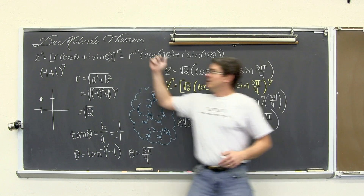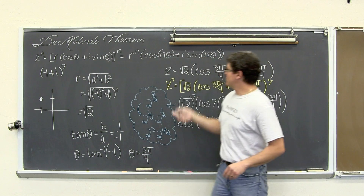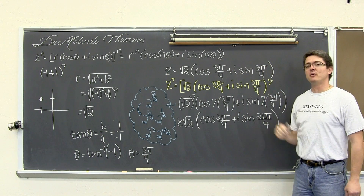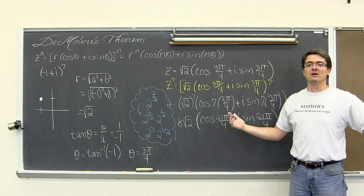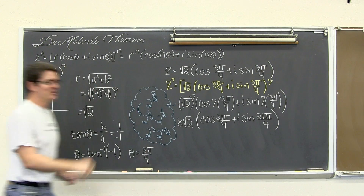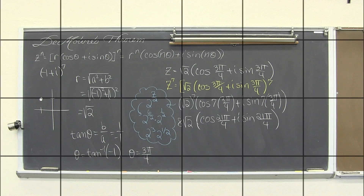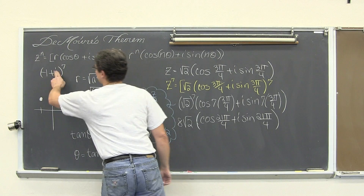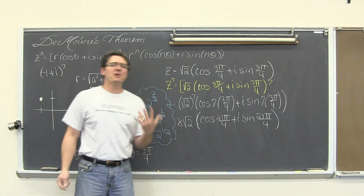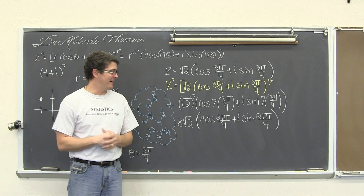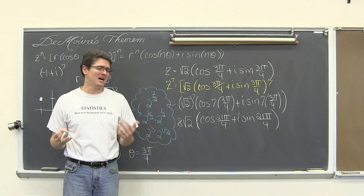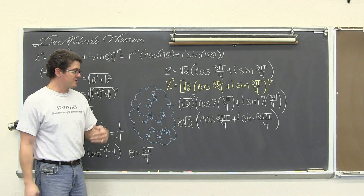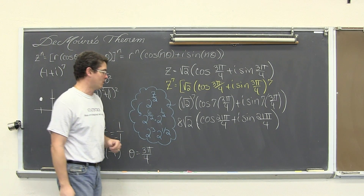That is how you take a complex number, convert it into polar form, and then raise that polar form to a very high power using De Moivre's theorem. However — this question started off in complex form and I left my answer in polar form. That might be okay, but it might not. So let's take this complex number in polar form and put it back into rectangular form.